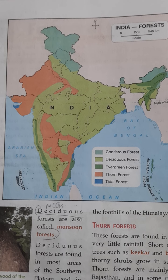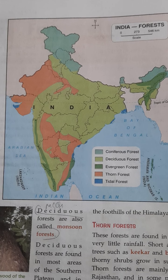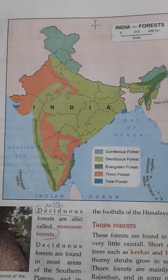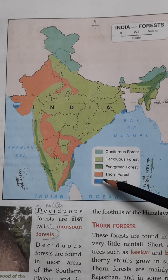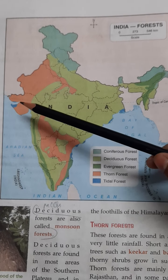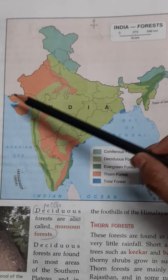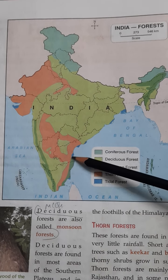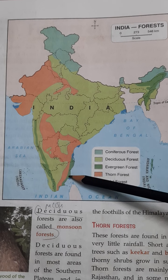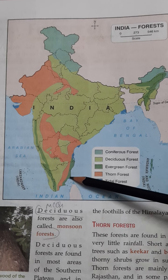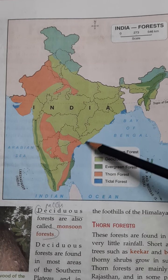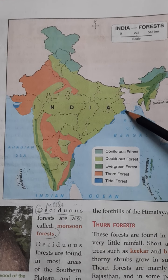Number 4 is thorn forest. These forests are formed in areas with very little rainfall. Short and thorny trees such as kikar and babul, and thorny shrubs, grow in such forests. Thorn forests are mainly found in Rajasthan.